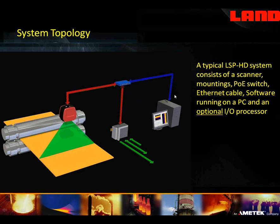From that Ethernet switch, we go back to a PC that will give you visualization of everything that the scanner's doing, and will also allow you to save data files and then automatically archive older files, either onto another drive on that machine or over the network to something else. And then we have an Ethernet-connected I/O processor, which is optional. A number of customers will say they would like to have outputs for certain lanes of interest along their product, and we can give them 4 to 20 milliamp outputs or voltage outputs. We can also bring inputs in to trigger different things.